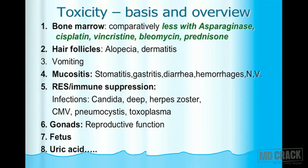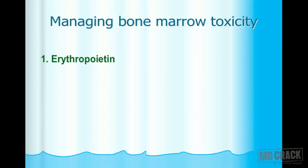To summarize the common toxicities of anti-cancer agents: bone marrow suppression, alopecia from hair follicle damage, predominant vomiting, mucositis at various mucous membranes, reticuloendothelial and immune system suppression leading to susceptibility to various infections, reproductive toxicity, fetotoxicity, and hyperuricemia.